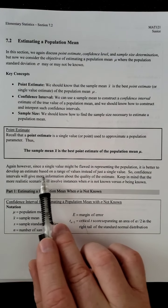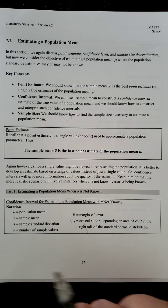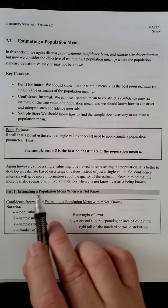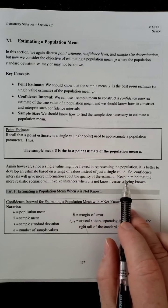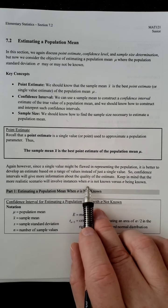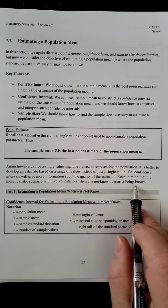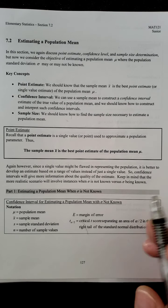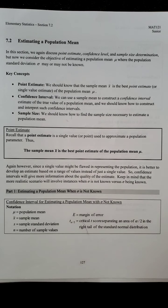it is better to develop an estimate based on a range of values instead of just a single value. So confidence intervals will give more information about the quality of the estimate. Keep in mind, the more realistic scenario will involve instances when sigma is not known versus sigma being known. So, again, if you don't know the population mean, chances are you don't know what the population standard deviation is.